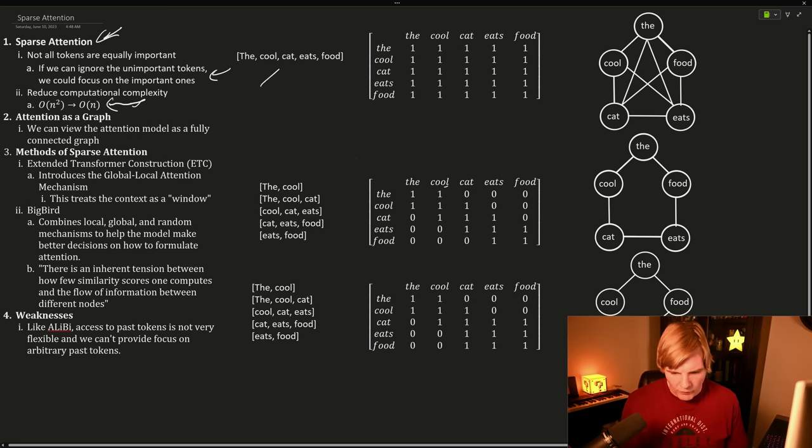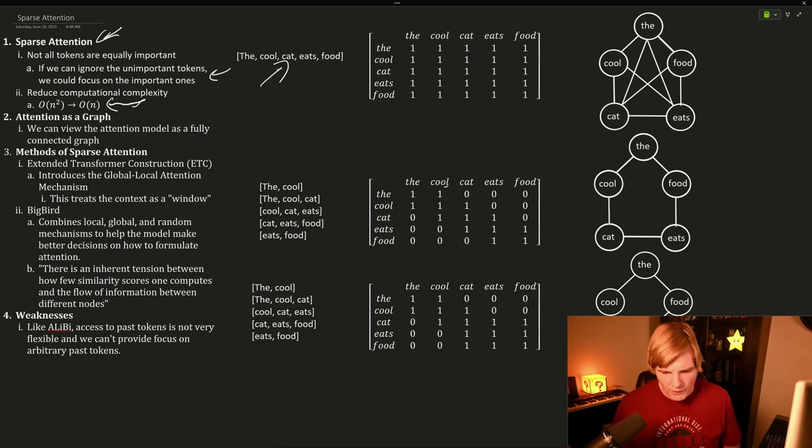So let's take, for example, the sentence: the cool cat eats food. And this also happens to be all of the tokens in our vocabulary. Then we could view our attention layer as being a connectivity graph or matrix where standard attention is a fully connected graph.